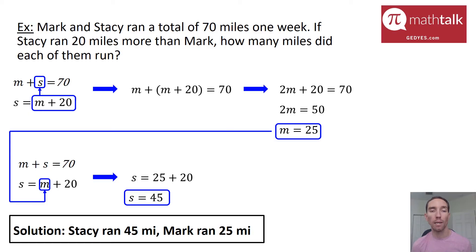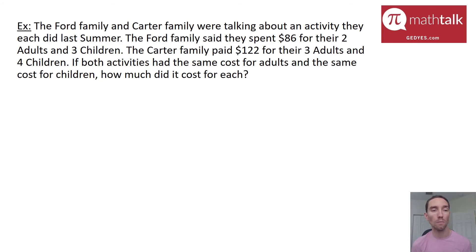Let's look at another example on how we can set up word problems to solve using systems of equations. The Ford family and Carter family were talking about an activity they each did last summer. The Ford family said they spent $86 for their two adults and three children. Carter family paid $122 for their three adults and four children. If both activities had the same cost for adults and the same cost for children, how much did they cost for each?